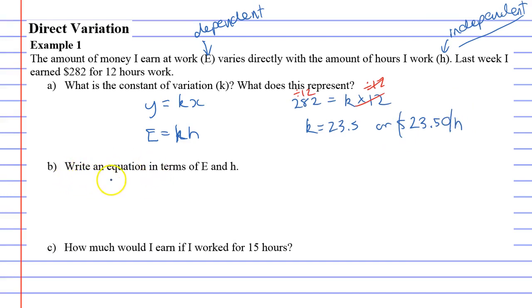Question B says, write an equation in terms of E and H. We're already there. E equals KH. And because K equals 23.5, we just write E equals 23.5H.